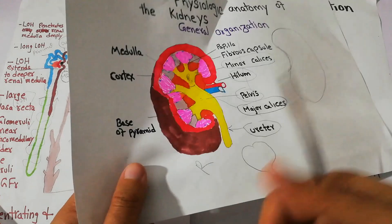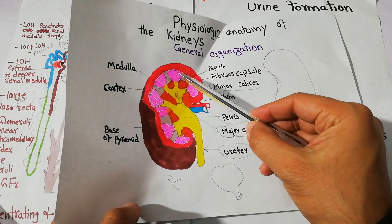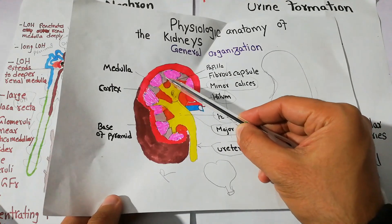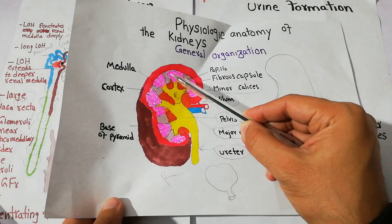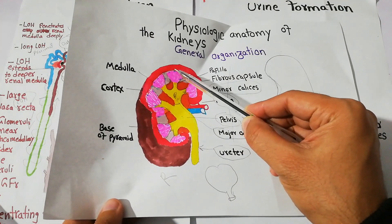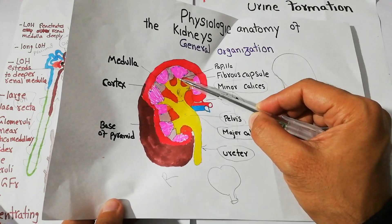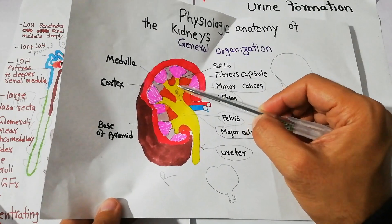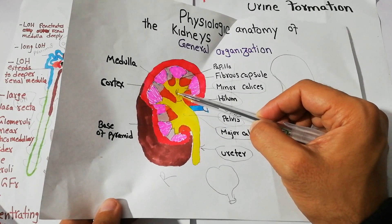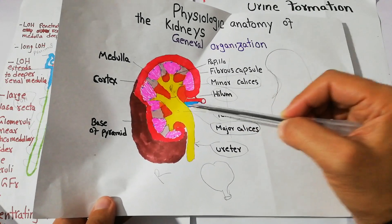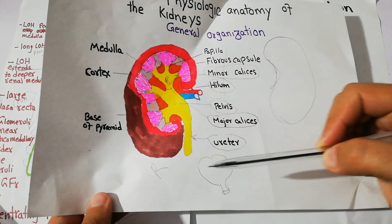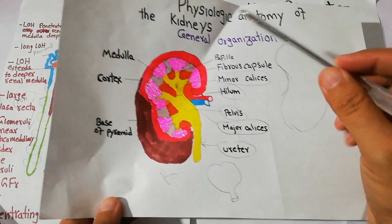The nephrons are basically grouped together in bundles known as the renal pyramids. They are making the urine and the urine is collected in the minor calyces, then it goes into the major calyces, then the renal pelvis, then the ureter, and finally into the urinary bladder.